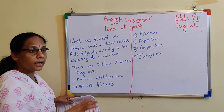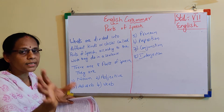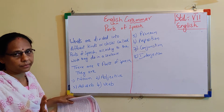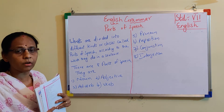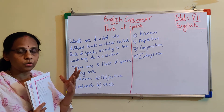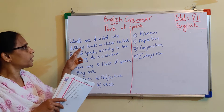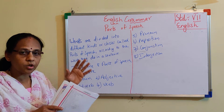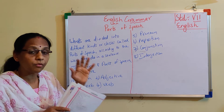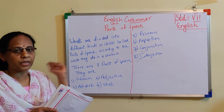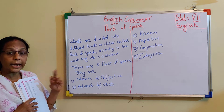How are they decided? According to the work done in a sentence. Parts of speech — you've always heard of them but may not know what they are. They are words divided into different kinds of classes, depending upon the work done in the sentence. That is parts of speech. How many parts of speech are there? Eight.